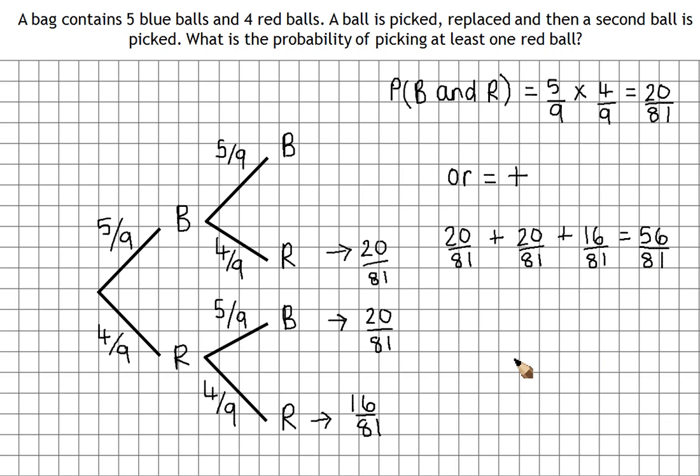As an alternative method for this question, what we could have done is just had a look at this branch. So a different method would be to say, well, the probability of picking at least one red ball is going to be one minus the probability of picking two blues.